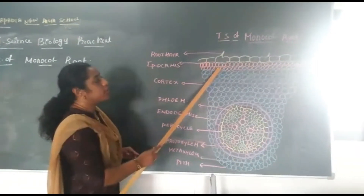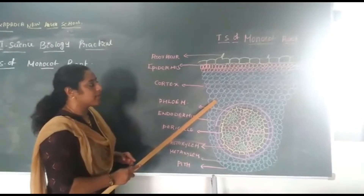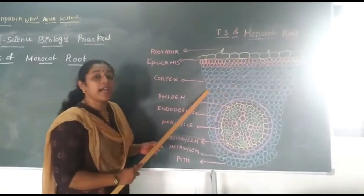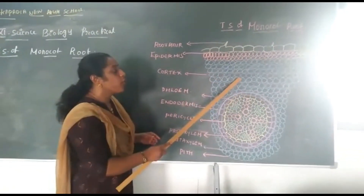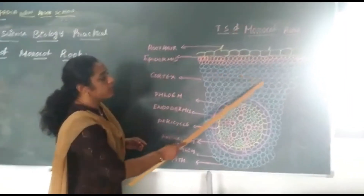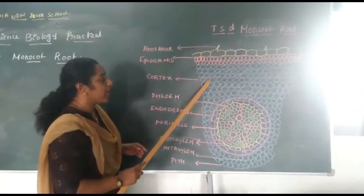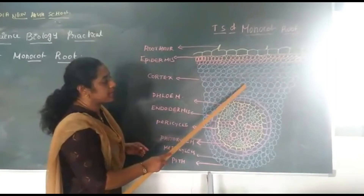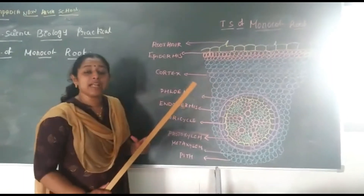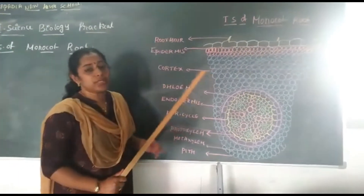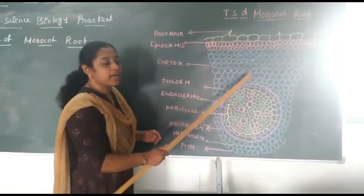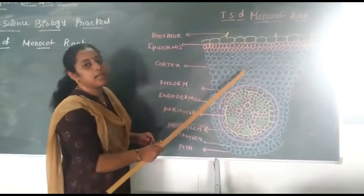Below the Epidermis you can find a multicellular cortex. Cortex consists of parenchyma cells and they are arranged loosely, so it consists of lots of intercellular space. The blue color structure in the diagram is the cortex. Intercellular space means the space between two cells. Cortex consists of loosely arranged parenchyma cells with intercellular space.